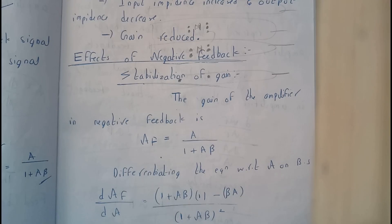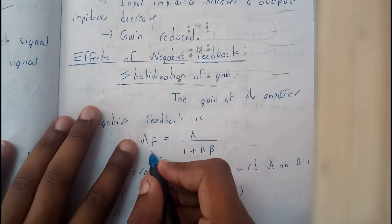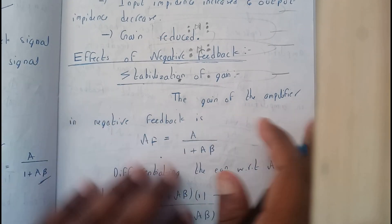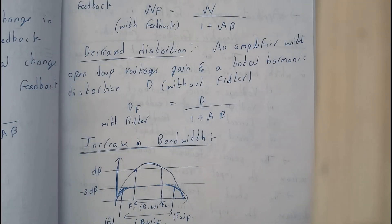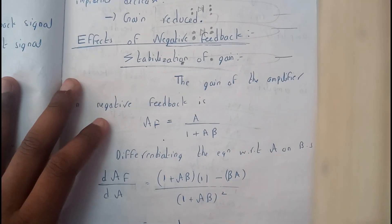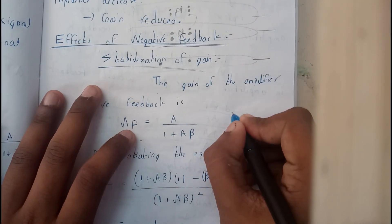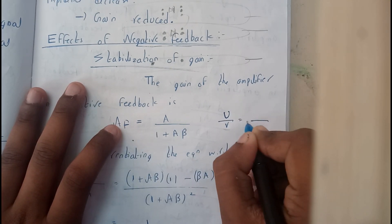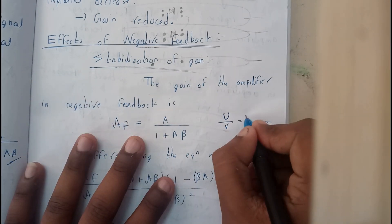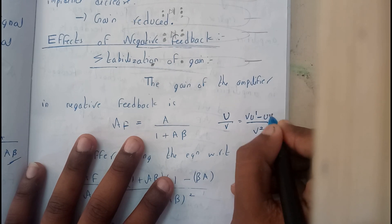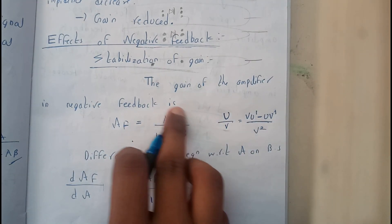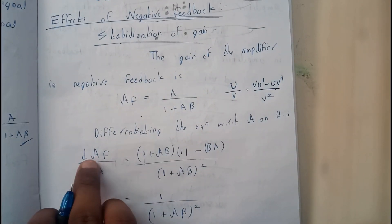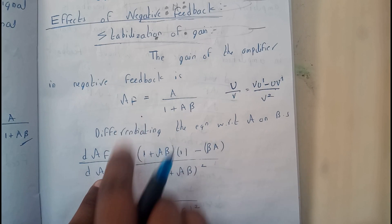So basically, differentiate this equation with respect to A on both sides. Before going through this, you need to recall the u/v differentiation formula: the derivative of u/v has denominator v-squared, and numerator v·u' minus u·v'. We apply this to A divided by (1 plus A·beta), differentiating with respect to A to get d(af)/dA.